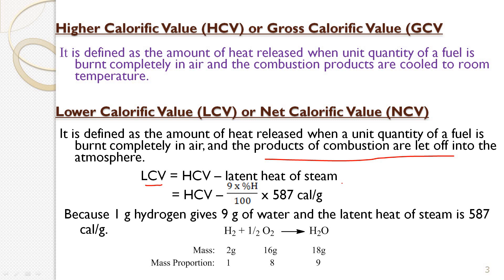The latent heat of steam is 587 calories per gram, or 587 kilocalories per kg. Since one part of hydrogen by mass produces 9 parts of water, we write: LCV = HCV − (9 × percentage of hydrogen / 100) × 587 calories per gram. Here, 9 represents the 9 parts of water produced for one part of hydrogen, which is why we multiply the hydrogen percentage by 9 divided by 100.